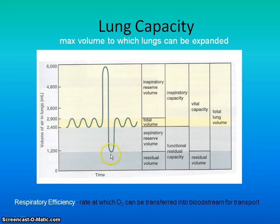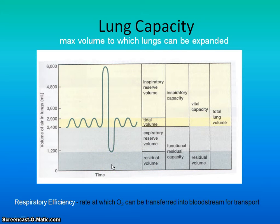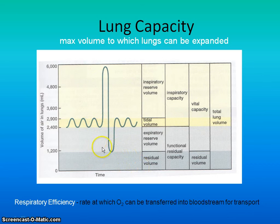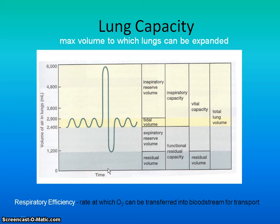There's an extra little bit at the bottom that never gets breathed out — that's called the residual volume. There's always a residual amount left in your lungs so they don't totally collapse and stick together. If you count that along with your vital capacity, that tells you your total lung capacity — the total volume your lungs can hold.